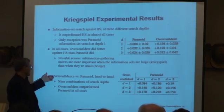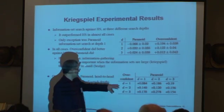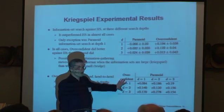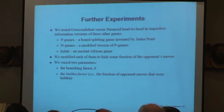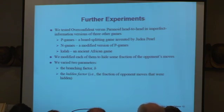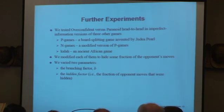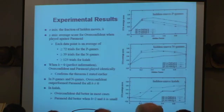We also tested these head-to-head in other games: P-Games, a board-splitting game invented by Judah Pearl; N-Games, a modified version of P-Games; and Kala, an ancient African game. We modified each to hide some fraction of the opponent's moves, making it an imperfect information game, and we varied two parameters: the branching factor — the number of moves available at each state — and the hidden factor, the fraction of opponent moves that were hidden.